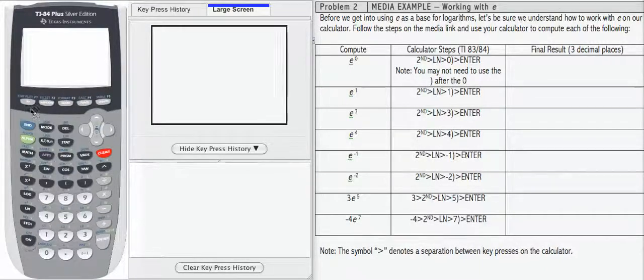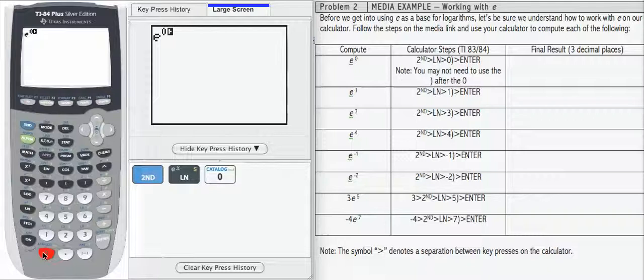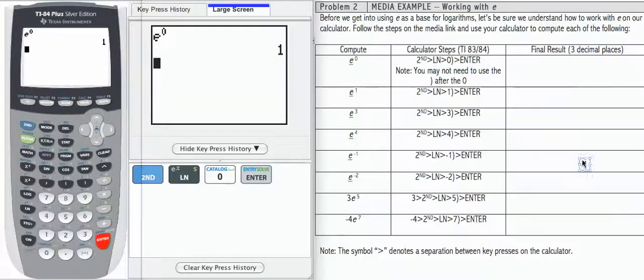So let's look at e to the zero and how to compute that. On this calculator, it's going to be second, e, and then to the zero. Notice on this calculator, I don't need to put in the second parentheses that's indicated in the steps on the table. Depending on your calculator, you may or may not have to do that. If your calculator gives you a left paren, you will need to enter the right paren to complete the input correctly. Now I'm just going to press enter, and that gives me a result of one for e to the zero.